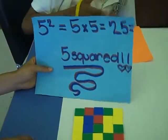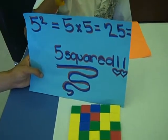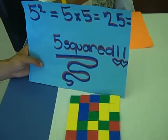Go. Go, Mel. 5 to the second power equals 5 times 5 equals 25 equals 5 squared.